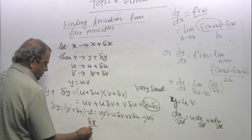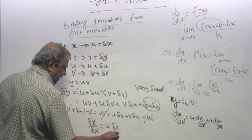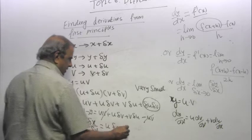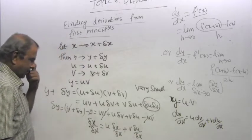So what is delta y by delta x? This by delta x, here we say u delta v by delta x plus v delta u by delta x. Right?